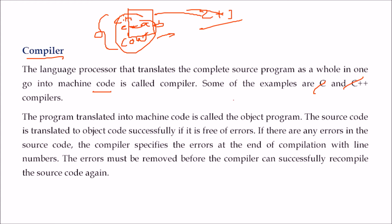Some languages use an interpreter instead, which we will discuss shortly. The program translated into machine code is called the object code. If the object code is created successfully and is free of errors, the program is understood by the machine and will run. Otherwise, the compiler will point out errors — for example, a missing semicolon — which need to be fixed before the whole program can be successfully compiled into machine code.